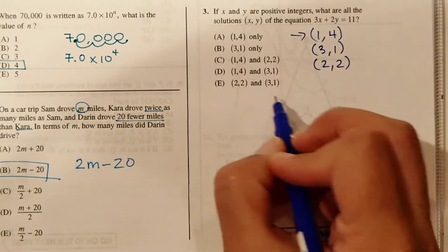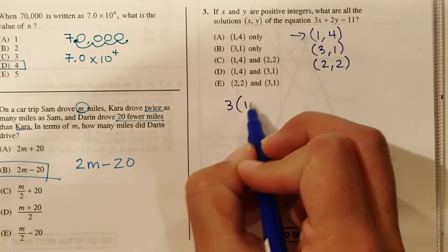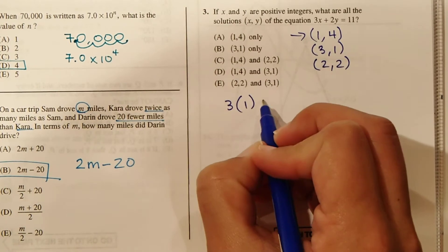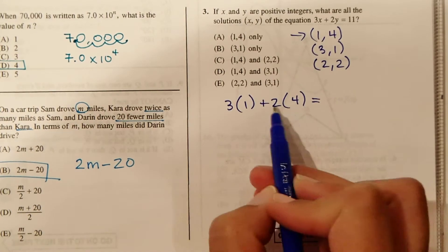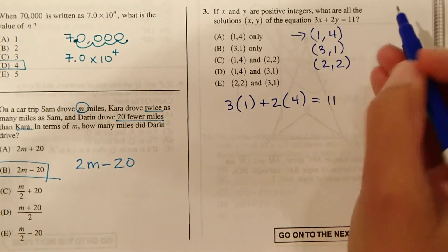So beginning with this one here, we're going to say 3 times x, which in this case is 1, plus 2 times y, which is 4, equals... So 3 plus 8 is 11. Okay, so that worked.